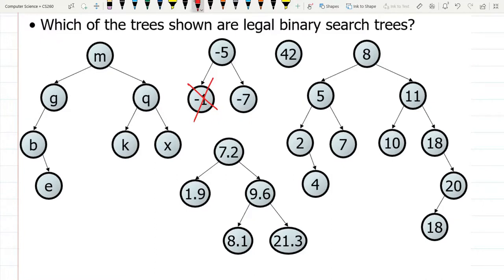We could keep looking, but if you find one or more nodes that are out of order, it's not a binary search tree. You can stop as soon as you find one node that's out of order.